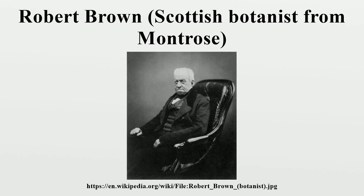That year he succeeded Jonas C. Dryander as Sir Joseph Banks' Librarian, and on Banks' death in 1820, Brown inherited his librarian herbarium. This was transferred to the British Museum in 1827, and Brown was appointed keeper of the Banksian Botanical Collection. In 1818 he published observations systematical and geographical on the herbarium collected by Professor Christian Smith in the vicinity of the Congo. In 1822, he was elected a Fellow of the Linnean Society and a foreign member of the Royal Swedish Academy of Sciences. In 1827 he became correspondent of the Royal Institute of the Netherlands; three years later he became associated member. When the Institute became the Royal Netherlands Academy of Arts and Sciences in 1851, Brown joined as foreign member.